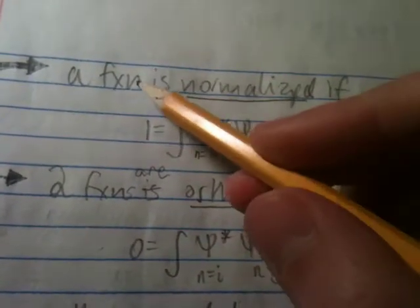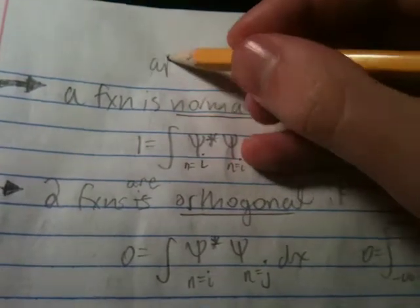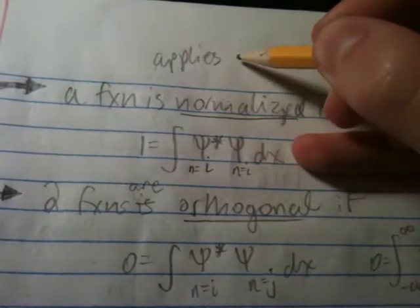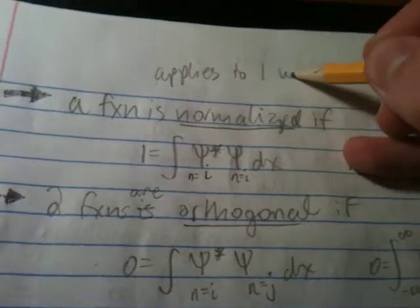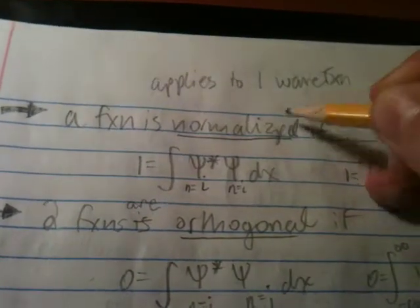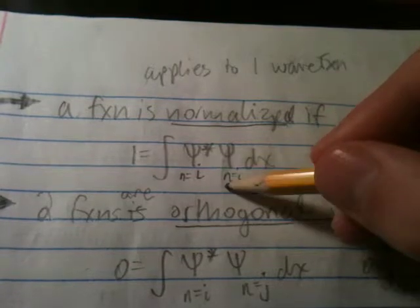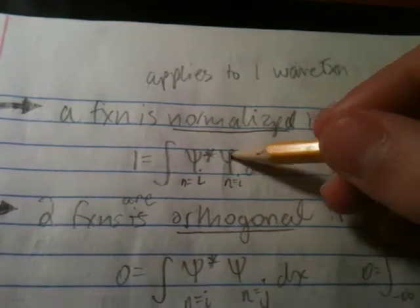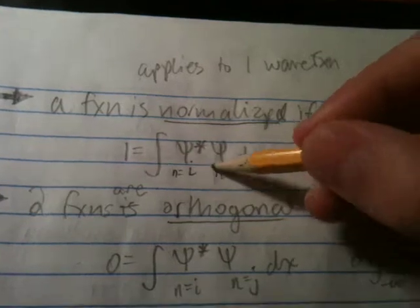Because a function is normalized, this applies only to one wave function. This is normalized to itself. You're using the same energy level function. These are both at i.